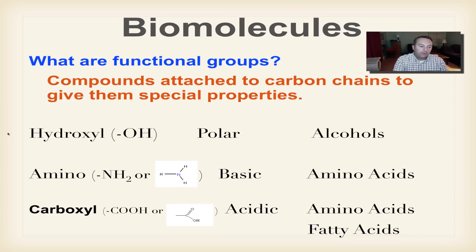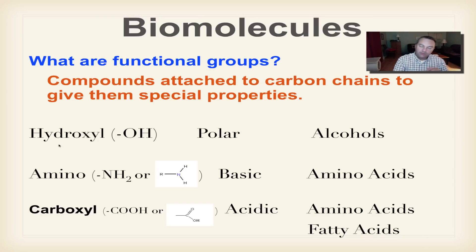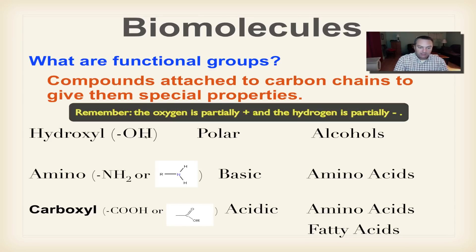For our purposes, we only need to memorize three functional groups. Our first group is called a hydroxyl. If you remember the hydroxide ion from acids and bases, they're very similar — it's an OH group, containing only an oxygen and a hydrogen. This group is polar, which means it can interact with water really well, so it's going to be able to dissolve in water. Your alcohols are going to have these, and a lot of your sugar molecules are going to have these also.